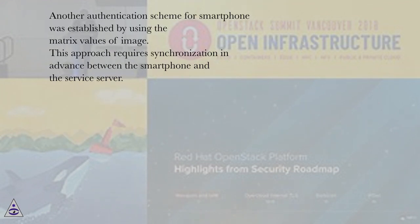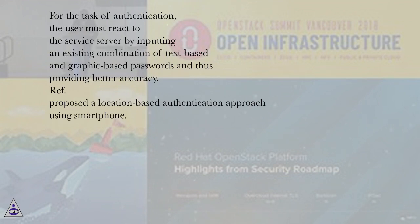Another authentication scheme for smartphones was established by using the matrix values of an image. This approach requires synchronization in advance between the smartphone and the service server. For authentication, the user must respond to the service server by inputting a combination of text-based and graphic-based passwords, thus providing better accuracy.